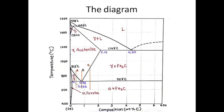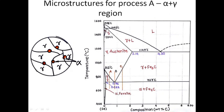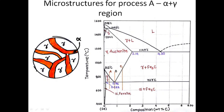Let us now look at different microstructures observed on the diagram. For process A, if our point of interest is in the gamma austenite zone, the microstructure shows grains of gamma austenite. As we cross the solvus line and approach a nearby point at higher temperature, alpha particles begin to nucleate. As we reduce the temperature, these alpha particles grow in size.